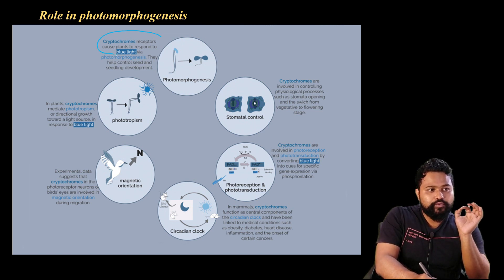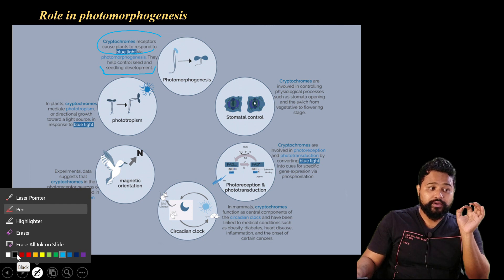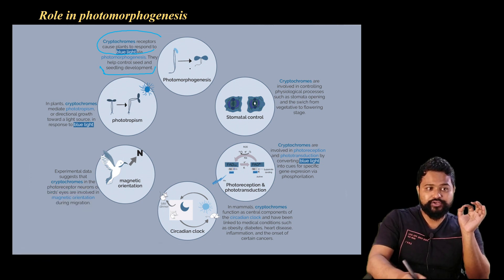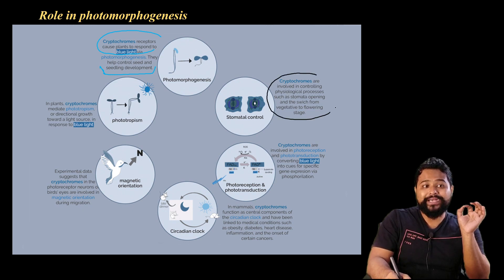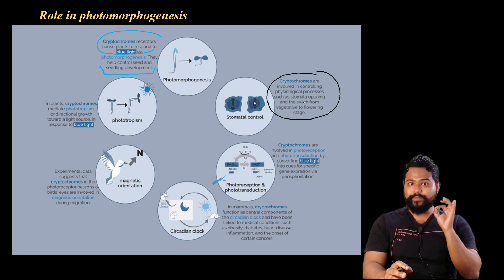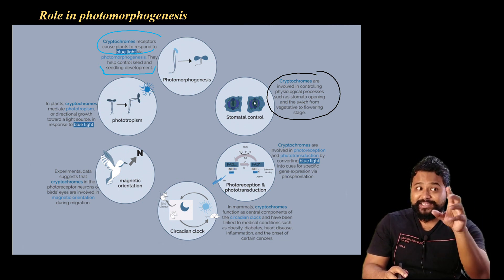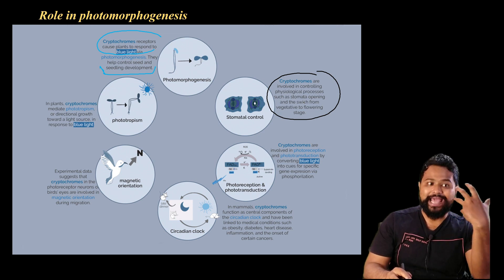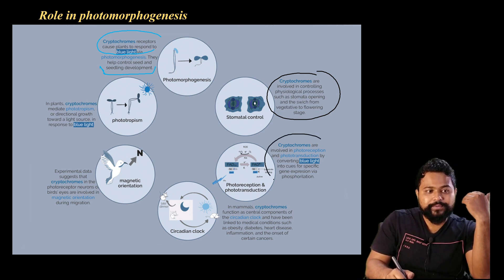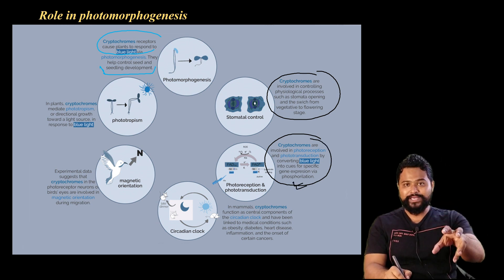Cryptochrome receptors cause plants to respond to blue light. They help control seed and seedling development. Cryptochromes are also involved in controlling physiological processes such as stomata opening and closing, and the switch from vegetative to flowering stage. Cryptochromes are involved in photo reception and photo transduction by converting blue light into cues for specific gene expression via phosphorylation.